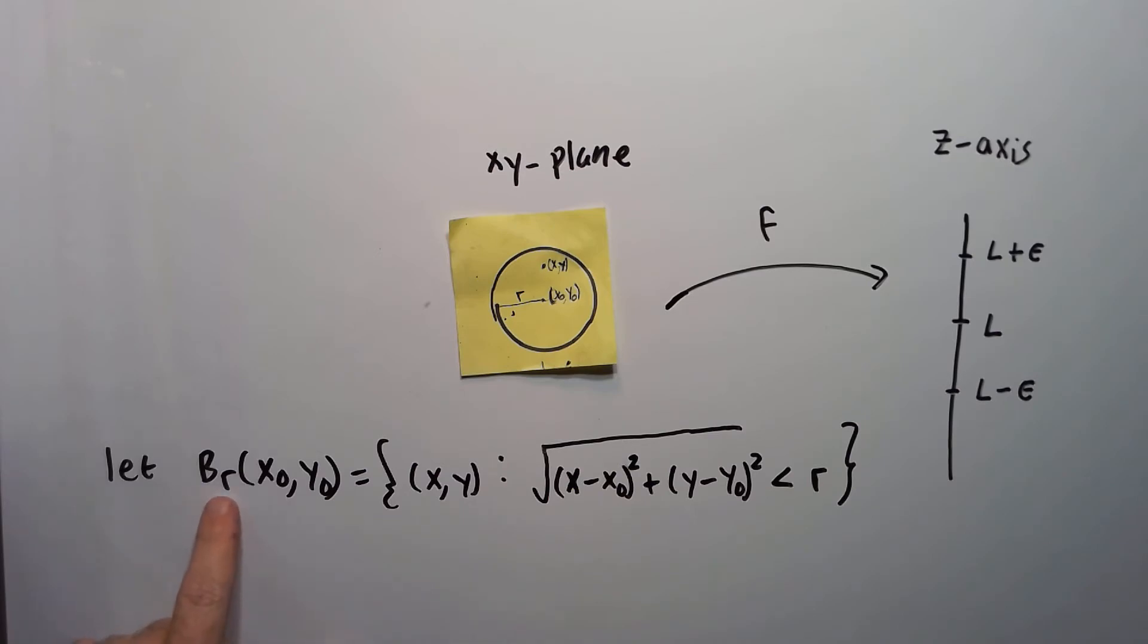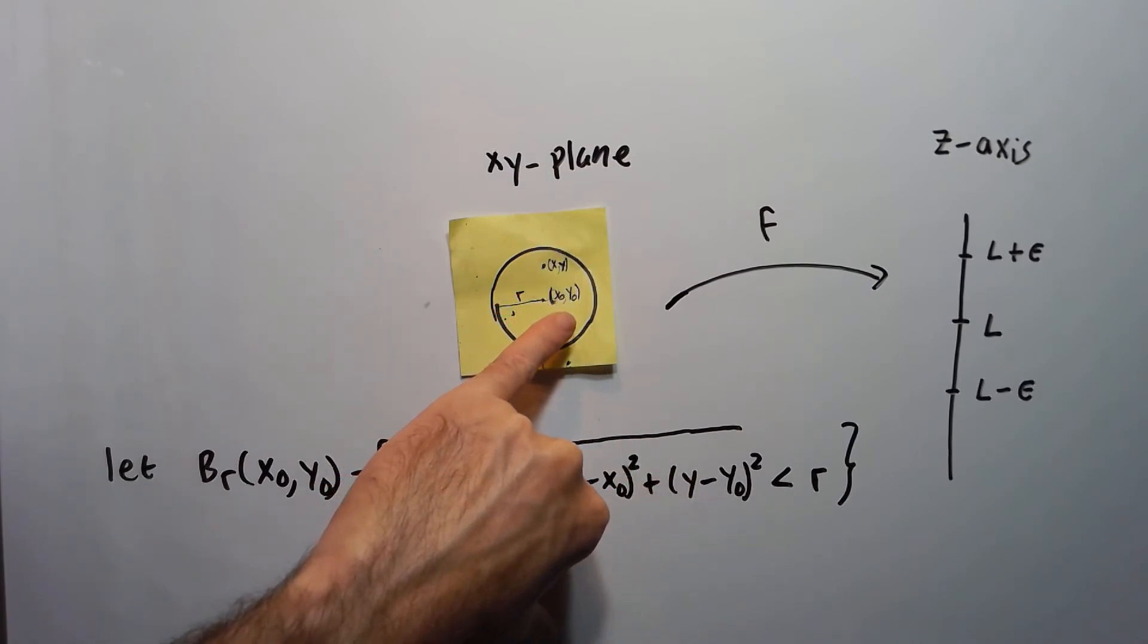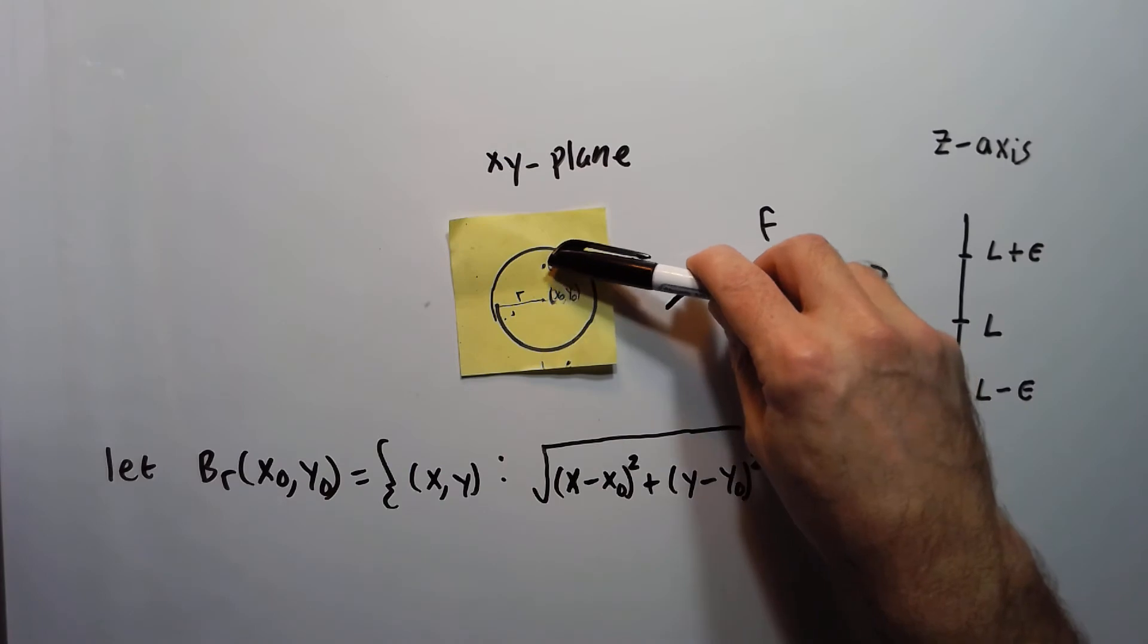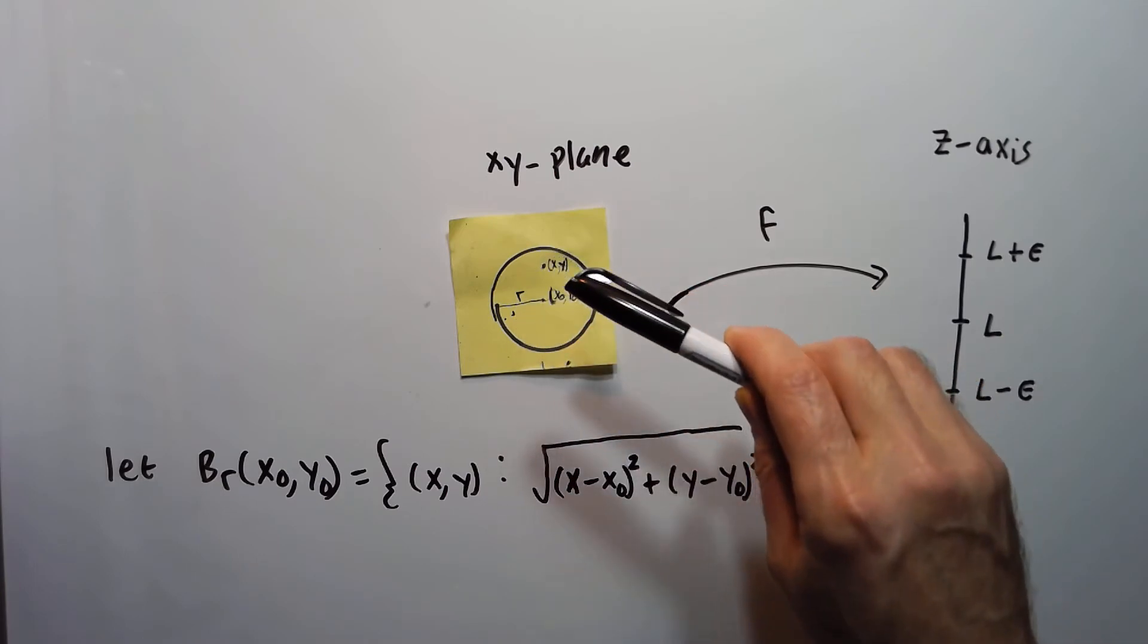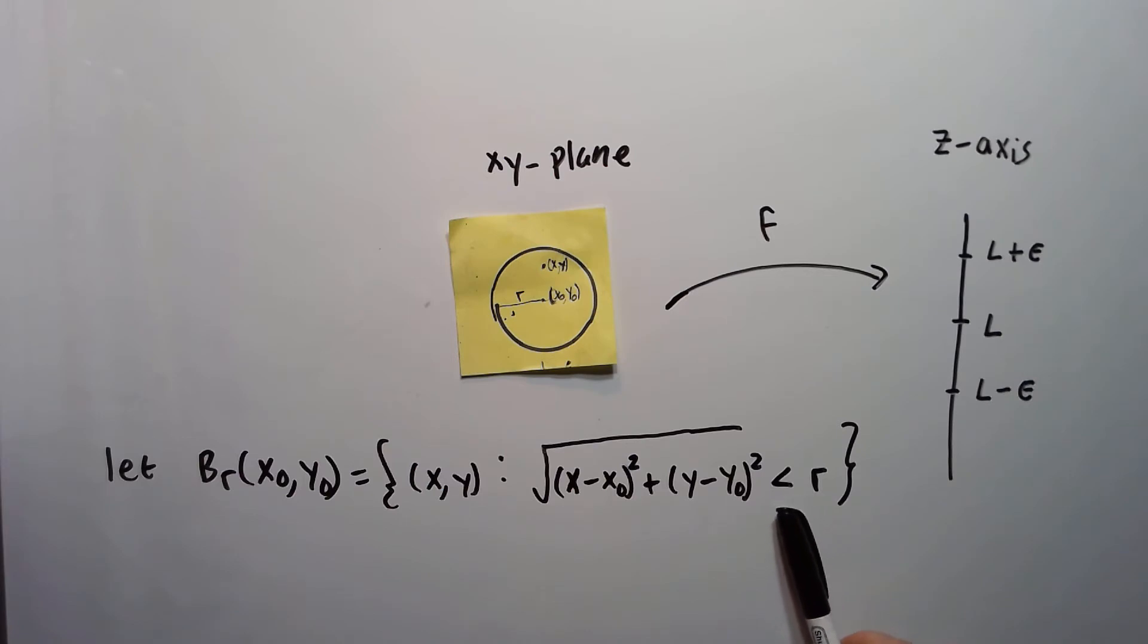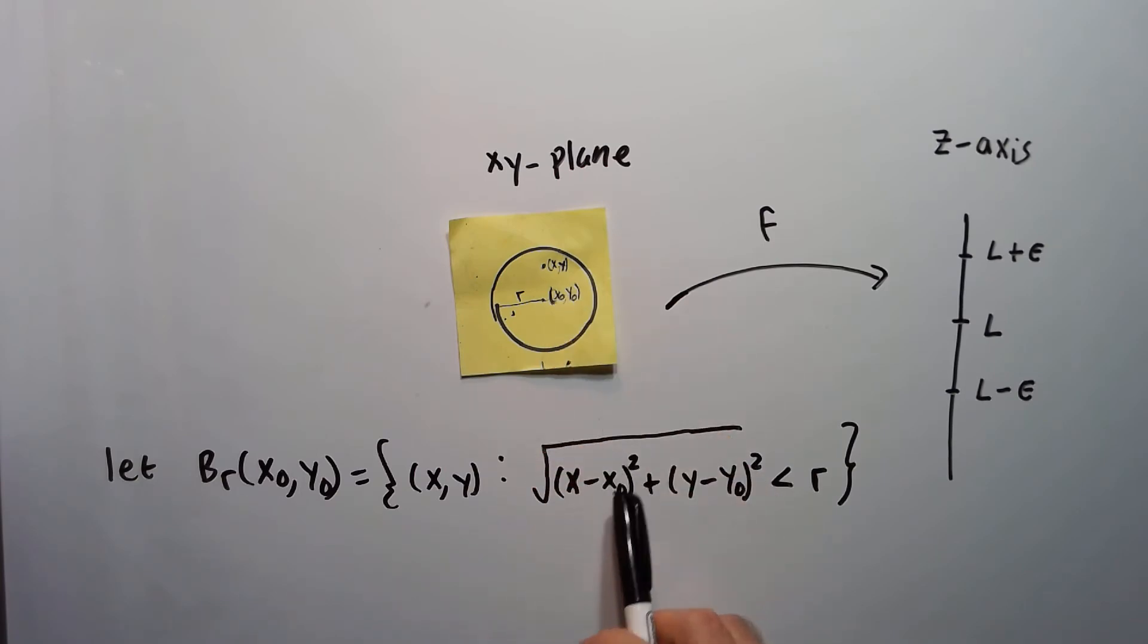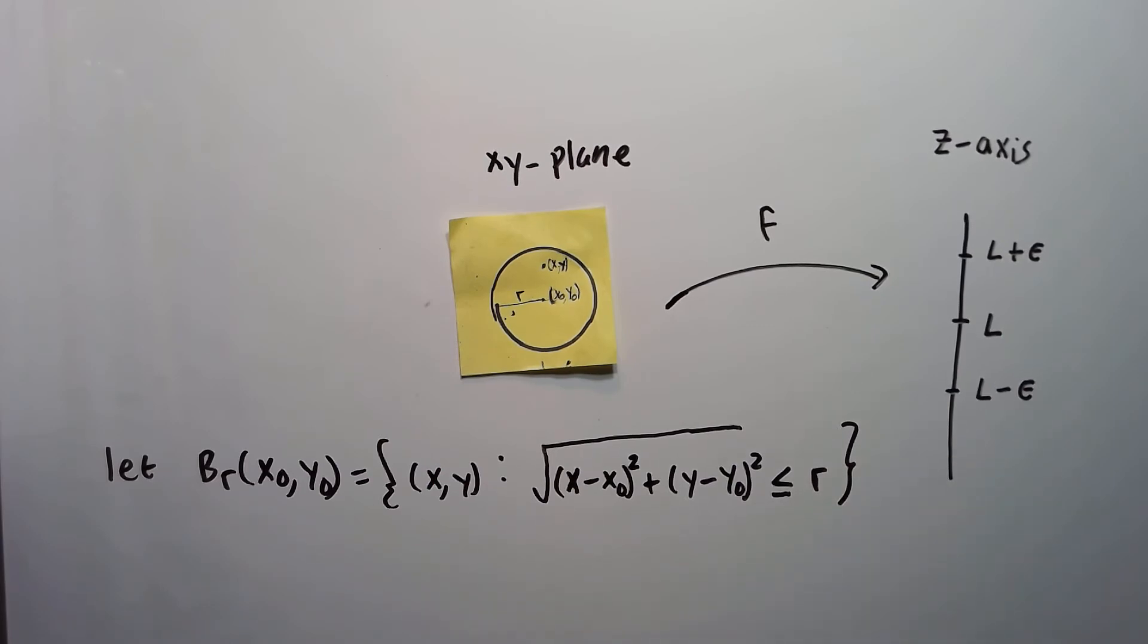So I'm going to let B subscript r of x0, y0 be all the points inside the circle up here. So x0, y0 is the center of the circle, and it has radius r. And say x, y is a second point there. So I'm going to use a distance formula to find the distance. So the distance between x, y and x0, y0 needs to be less than the radius. So it would be the distance of the x values: square root of (x minus x0) squared plus (y minus y0) squared, less than r. So this would be the equation of all the points in that circle there. I could say less than or equal to r is fine. So that would describe all the points in the circle.